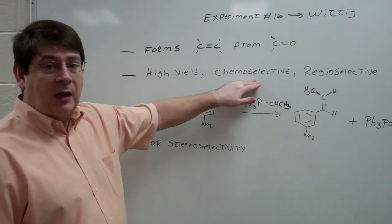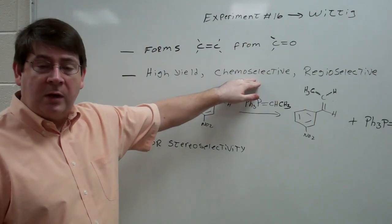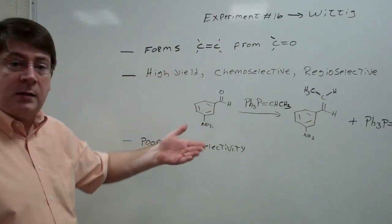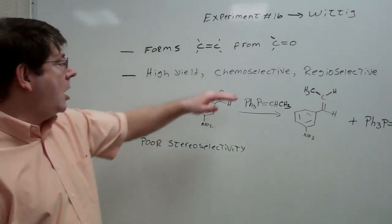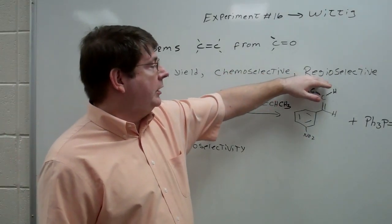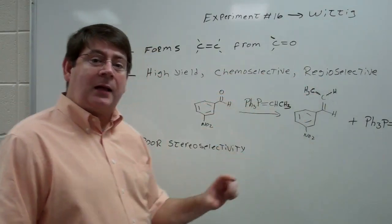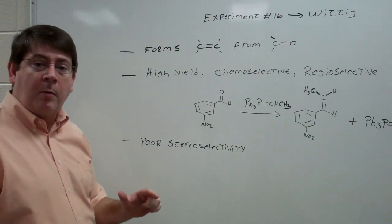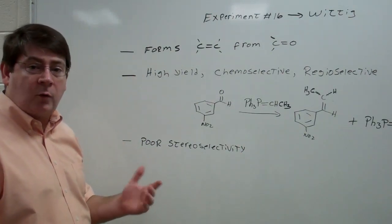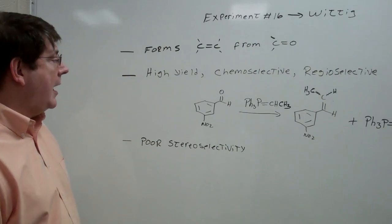It's a very chemoselective reaction. It doesn't interfere with a number of functional groups, so it's quite tolerant in that regard. It's regioselective. That is, we know exactly where that carbon double bond is going to end up in the product. We don't have to worry about a mixture of alkenes.